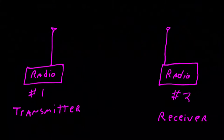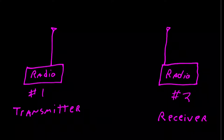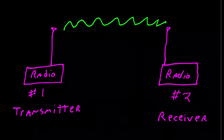In this example we have two radios: radio number one acting as a transmitter and radio number two acting as a receiver. At the transmitter, the radio produces electrical energy that travels up the antenna and is converted to electromagnetic radiation or a radio wave, which travels through space to radio number two, is received by its antenna, converted back into electrical energy, routed into the radio, and decoded.